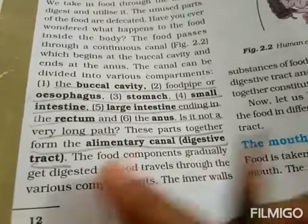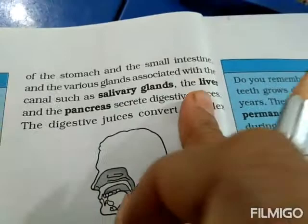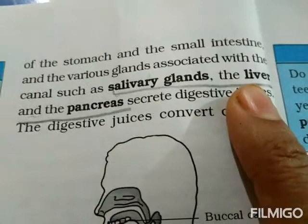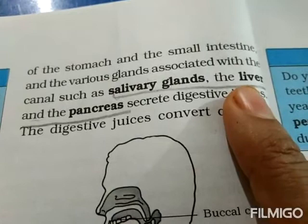The inner walls of the stomach and small intestine, and the various glands associated with the canal — such as salivary glands, the liver, and pancreas — secrete digestive juices. The liver generates bile juice (bile salts), which is yellow in color and is extremely essential for breaking down proteins.